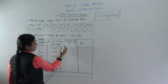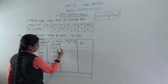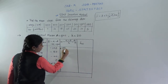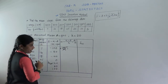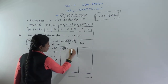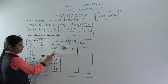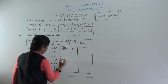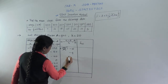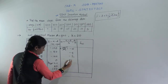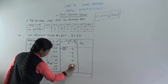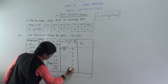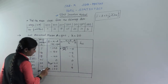Now we calculate ui = di/h. Minus 100 divided by 20 gives minus 5. Minus 80 divided by 20 gives minus 4. Minus 40 divided by 20 gives minus 2. For di = 0, ui = 0. For 80 divided by 20, ui = 4. And 100 divided by 20 gives ui = 5.